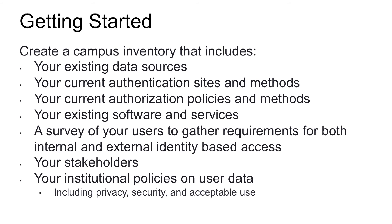So what do you need to get started? Before anything else, start by making sure you have a clear list of what you have to work with on your campus. This inventory should include the data sources you have available, a list of where authentication over a network is required and how authentication is done, a list of authorization policies — noting that authentication and authorization are two very different things — a list of existing software and services on the network, an understanding of the requirements of your users and their collaborations both on and off campus, and a clear list of campus policies around the expectations of privacy, security, and acceptable use.